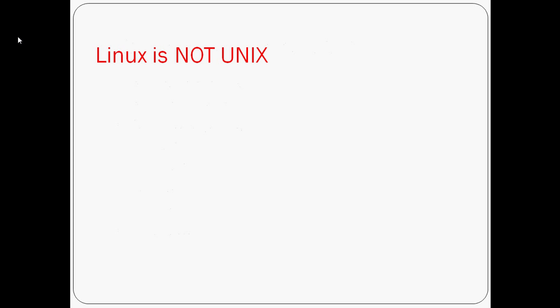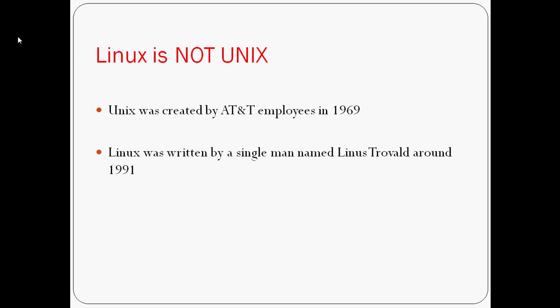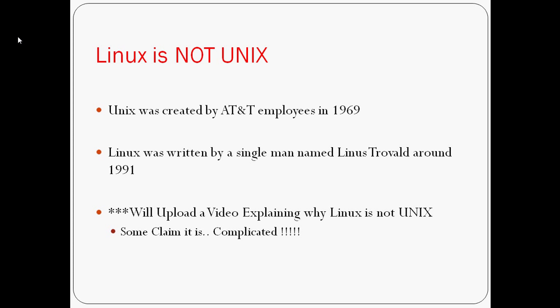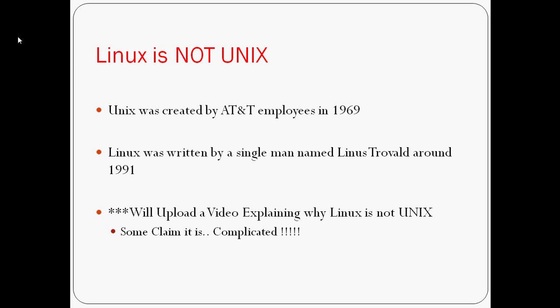Remember, one of the most important things is that Linux is not UNIX — they are two different operating systems. UNIX was created by AT&T employees in 1969, and Linux was written by a single man named Linus Torvalds around 1991. The open group that holds the UNIX trademark has claimed that Linux is a misuse of the UNIX trademark, while supporters of Linux do not agree to this statement. So remember: Linux is not UNIX.